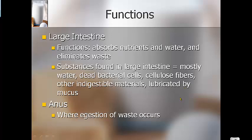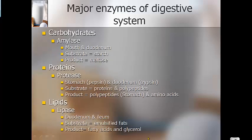All that undigested matter packs into your rectum at the end of your large intestine. Once enough is packed in, you have a bowel movement and the waste travels out through your anus. Your anus is another sphincter — a round circular muscle that can open a hole and shut it — so when enough undigested material is packed into your rectum, the anus sphincter opens and you can move that waste out of your body.